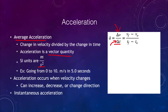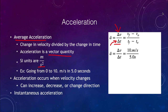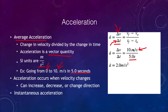Looking at an example: going from zero to 10 meters per second in five seconds, what is our average acceleration? The change in velocity is the final velocity, 10 meters per second, minus the initial velocity of zero, giving a change in velocity of 10 meters per second. Our change in time is five seconds. Dividing those gives an average acceleration of two meters per second squared — or two meters per second per second.